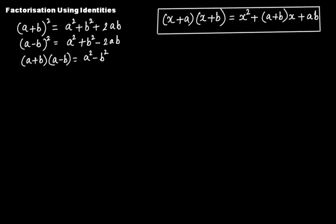Now we want to discuss one more identity — factorization by using the identity: (x + a) multiplied by (x + b) is equal to x squared plus (a + b)x plus ab.